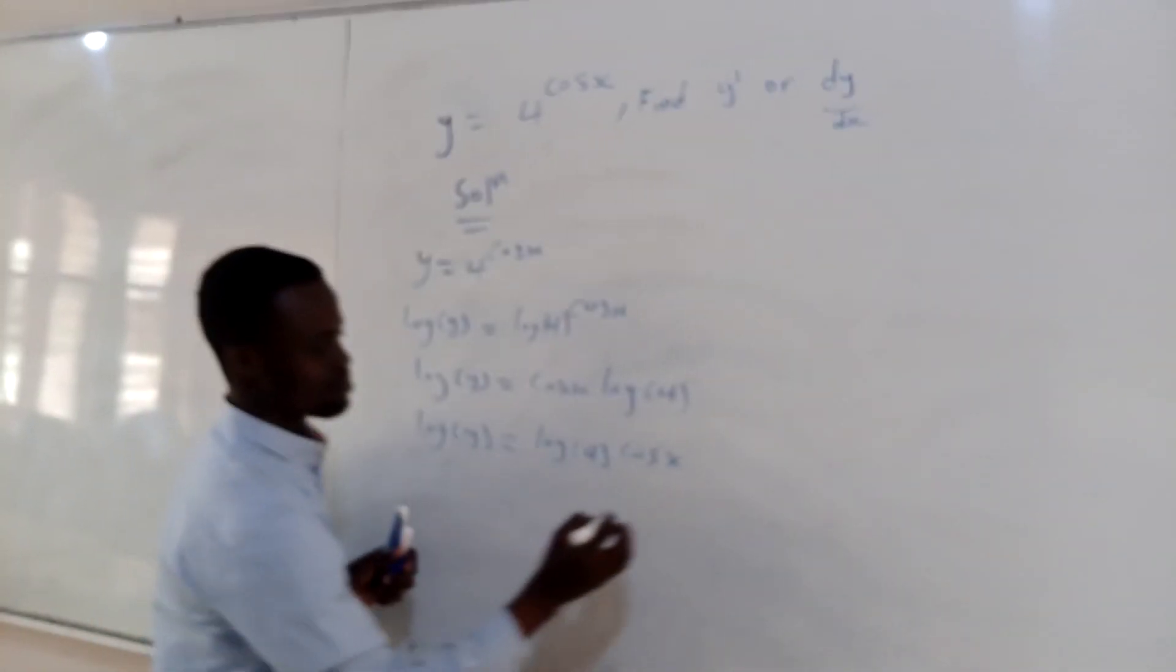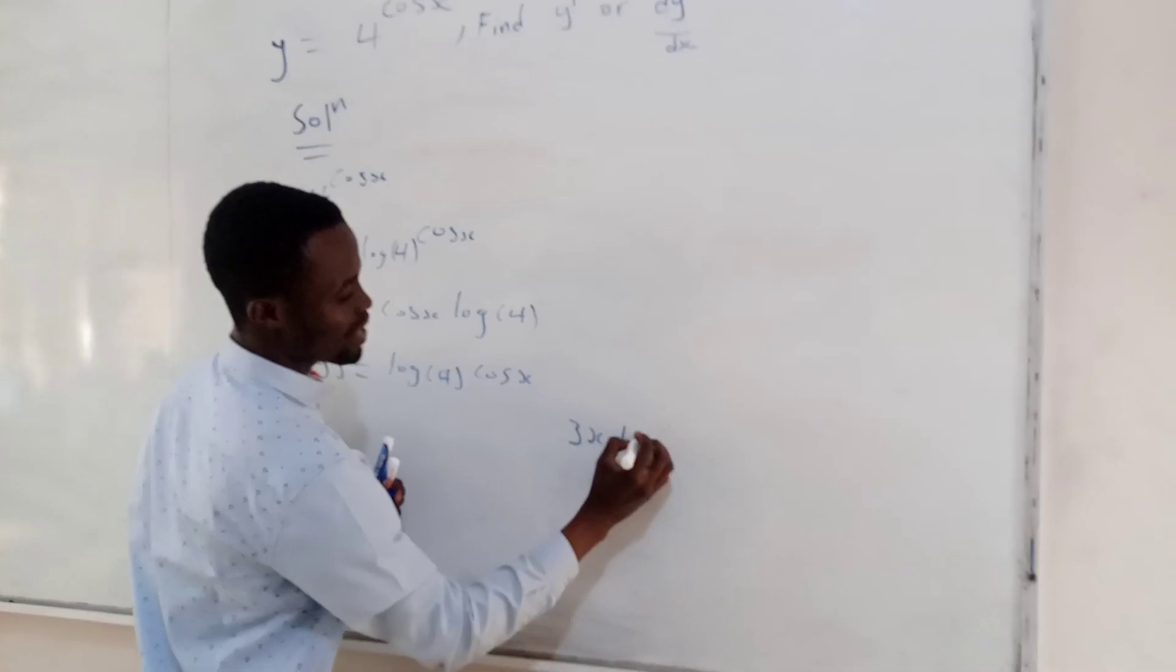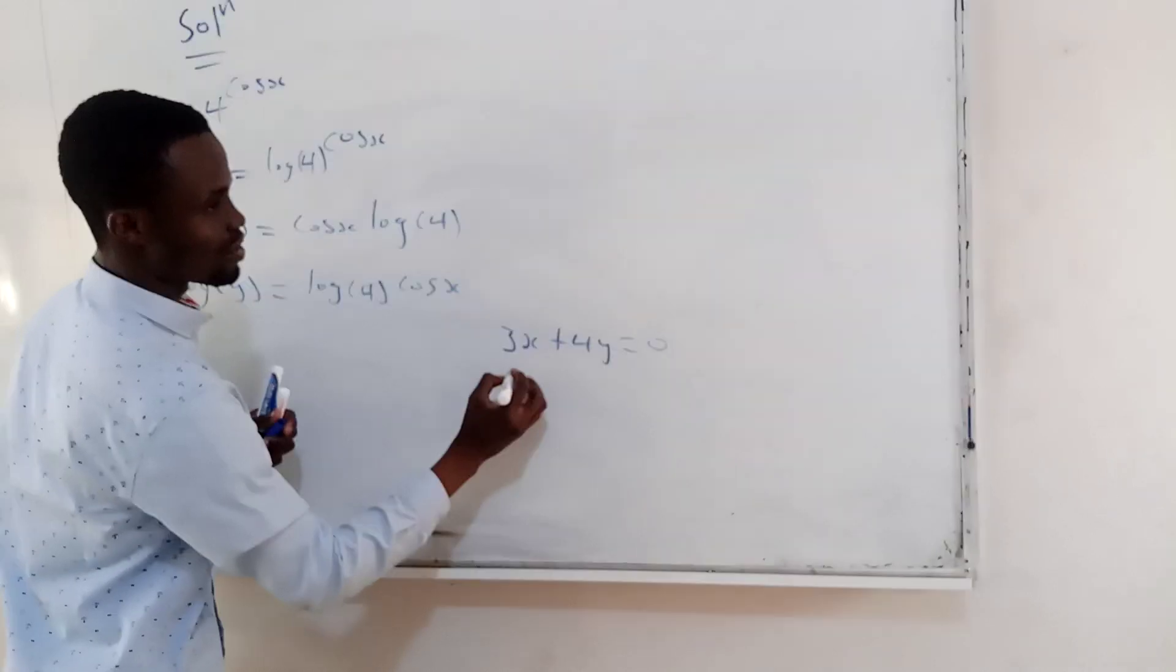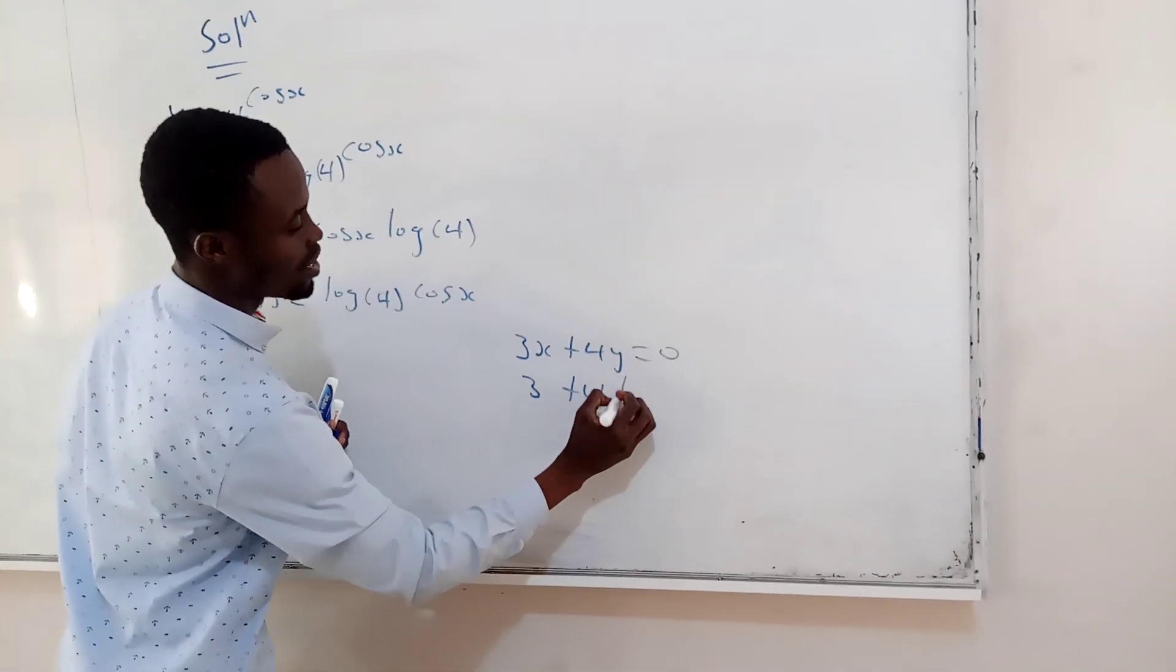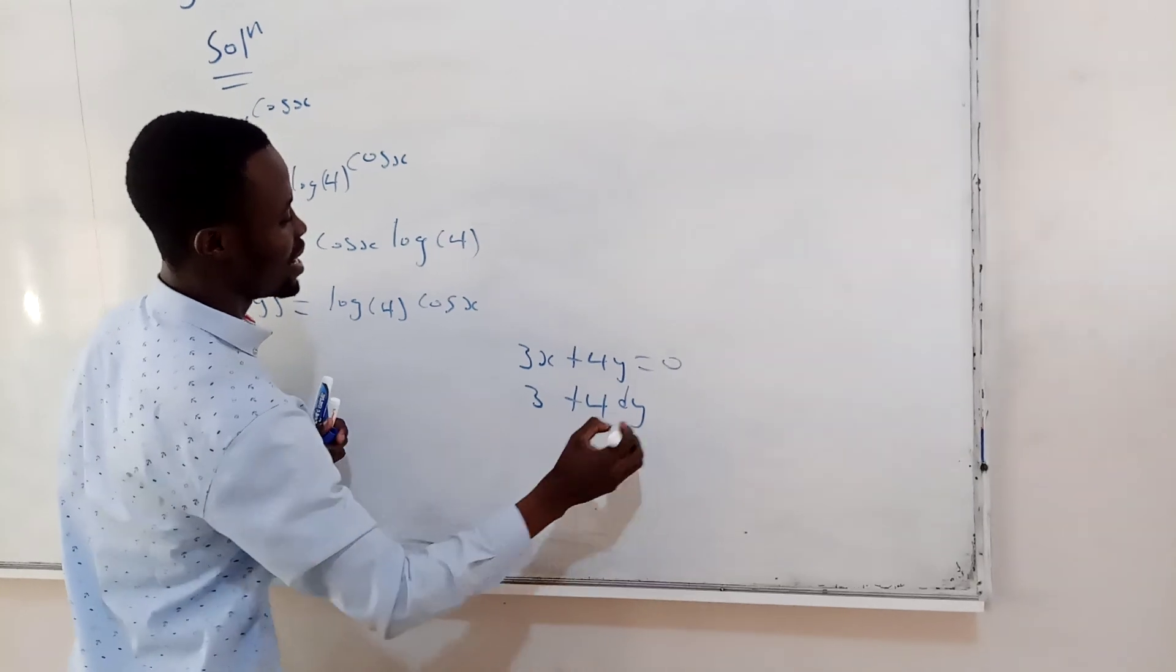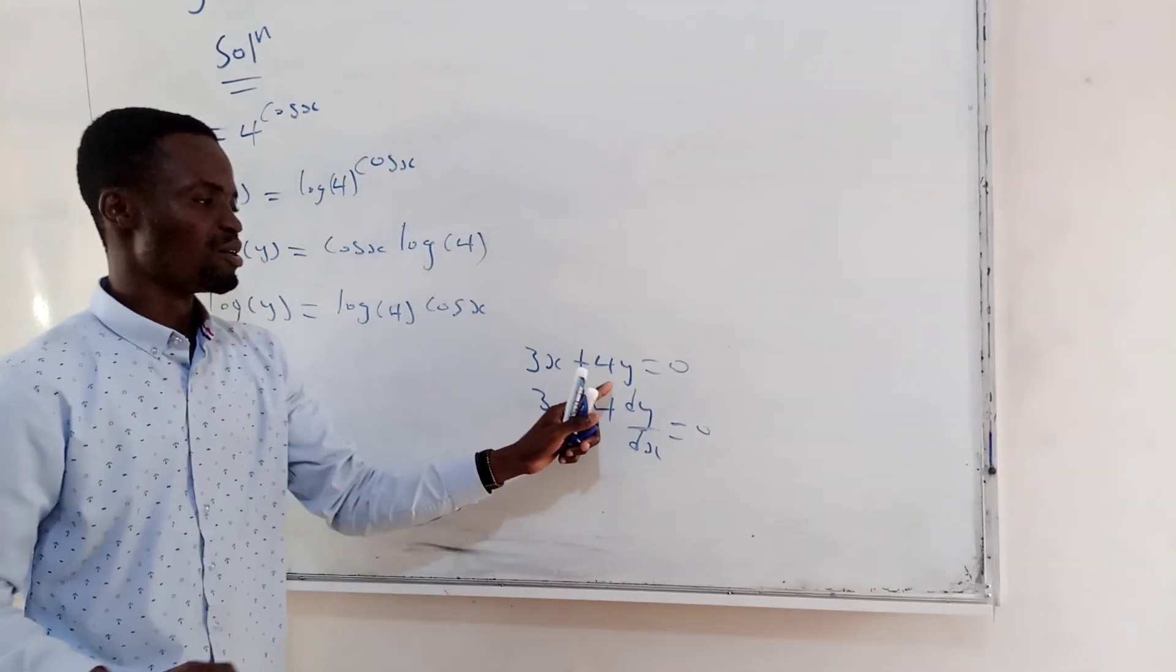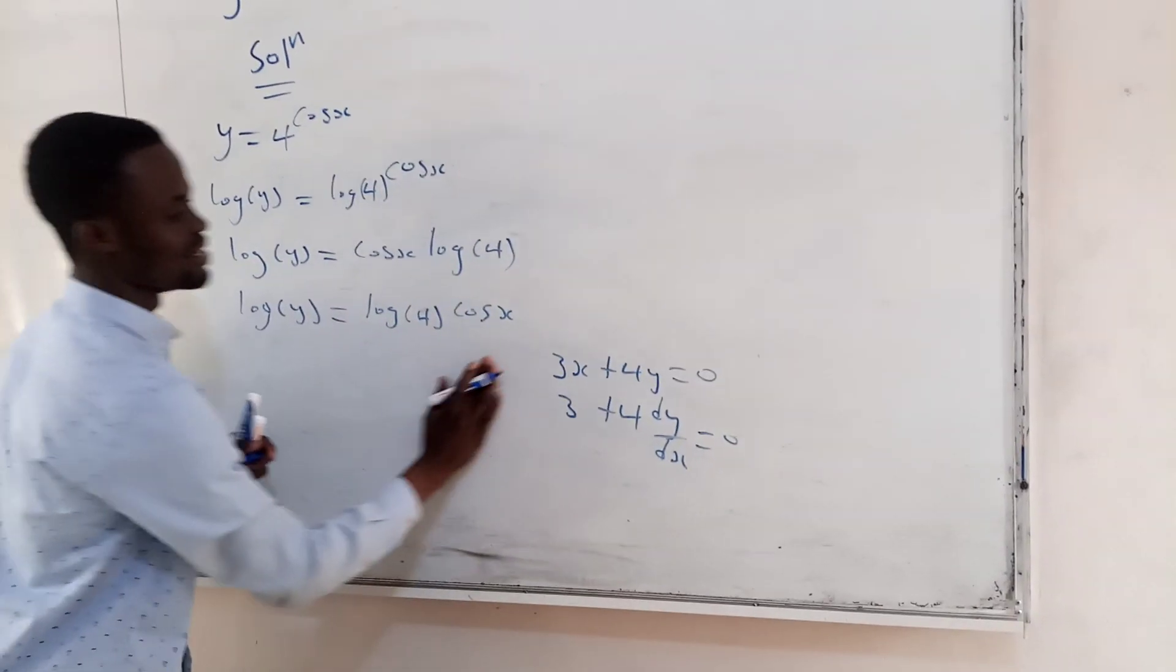By high school, when you have 3x plus 4y equal to 0, you differentiate this and you get 3 plus 4, then dy dx, which is equal to 0. Because of the y, you attach it to the y. You are going to use the same thing here.